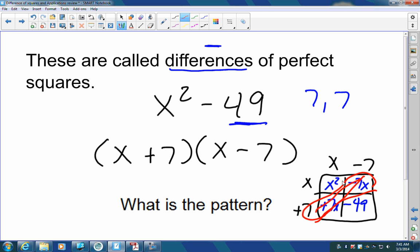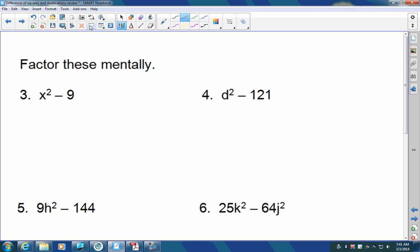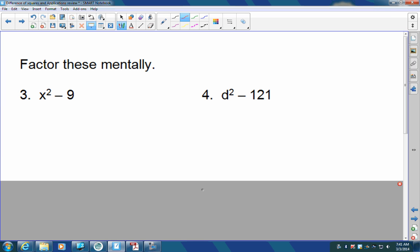Well, x times x is x squared. x times negative 7 is negative 7x. x times 7 is positive 7x. 7 times negative 7 is negative 49. Remember, you add these two together. What happens to these two numbers? They cancel out and make 0, right? So that's why the only thing we're left with is x squared minus 49.